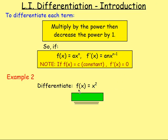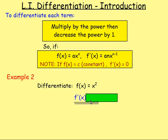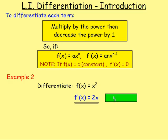Example 2: Differentiate f(x) = x². Differentiating f(x) gives you f'(x). It's really 1x², so multiply by the power: 2 times 1 gives you 2. Then take 1 off the power, giving x to the power of 1. So it's 2x to the power of 1, and you don't need to write the 1. Your answer is f'(x) = 2x.